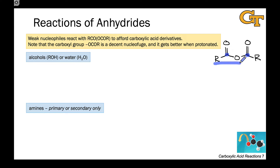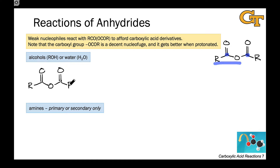Provided we're going thermodynamically downhill in replacing the carboxyl group with the nucleophile, this will work. In practice, we can start with an anhydride. To keep things simple, I'm just going to think about a symmetric anhydride with both R groups the same. Things get weird if the anhydride is not symmetric, because we have a question of which carbonyl group gets attacked if these are not identical. So let's just think about a symmetric anhydride for the time being.